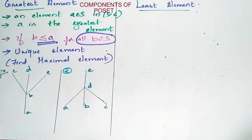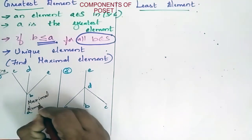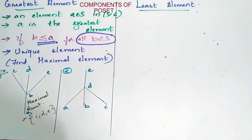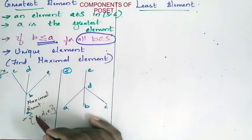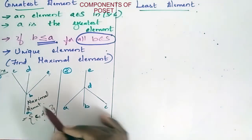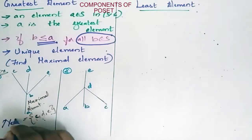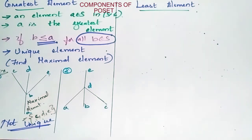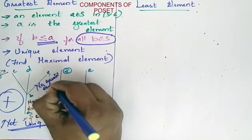Example 1: The maximal elements are the topmost elements in the Hasse diagram — that is C, D, and E. Since C, D, and E all remain parallel, you have three elements at the top of the Hasse diagram, so this is not unique. You don't have a single element, so there is no greatest element here.